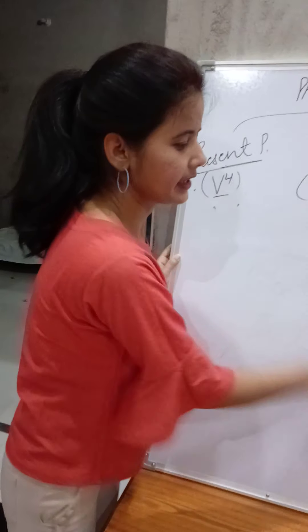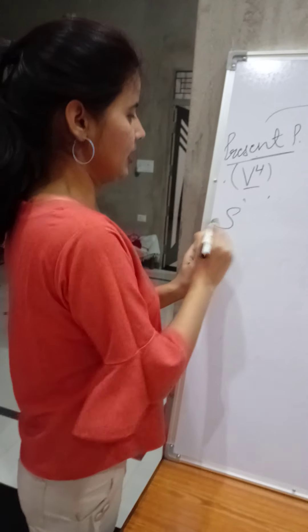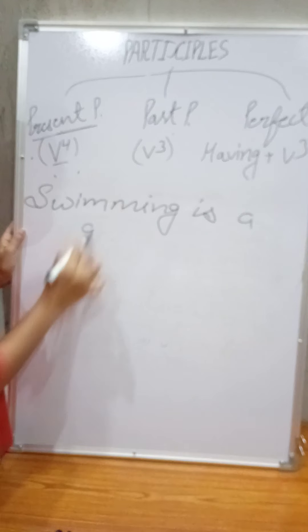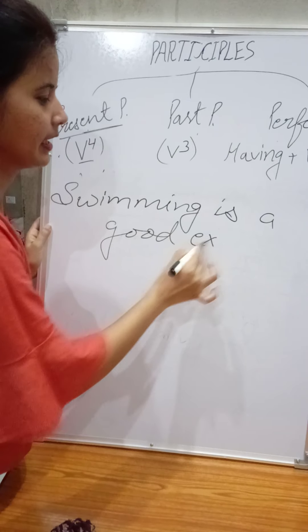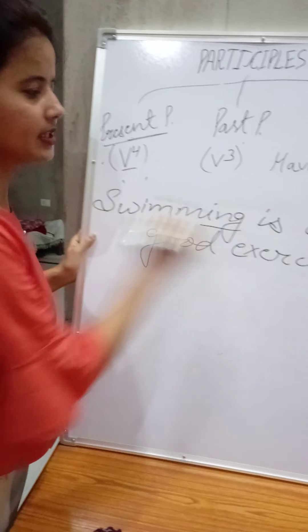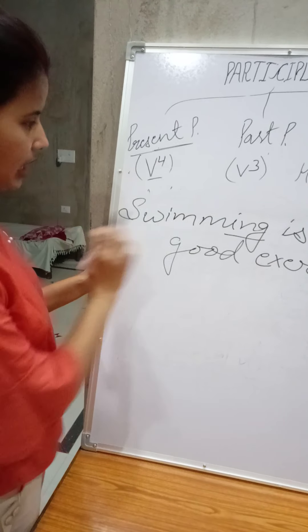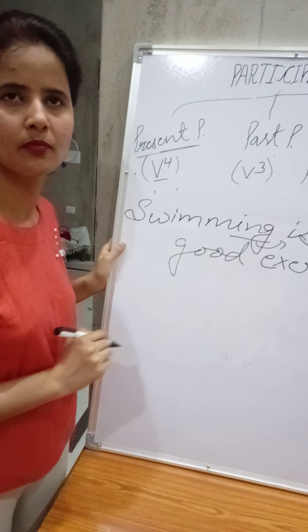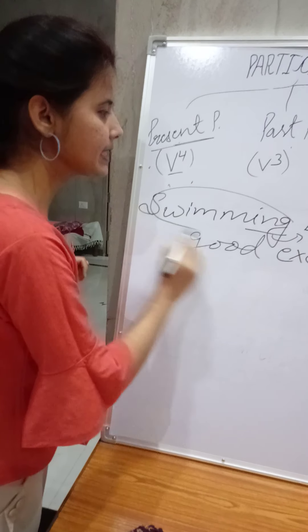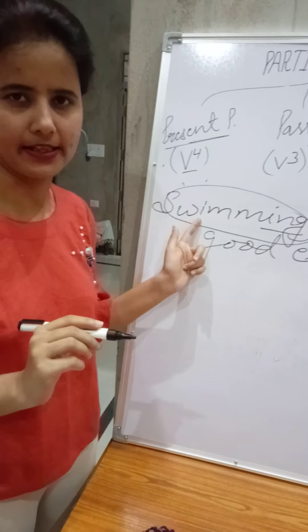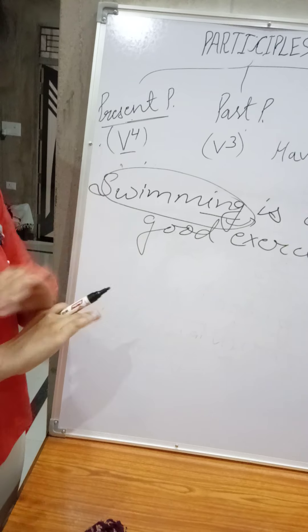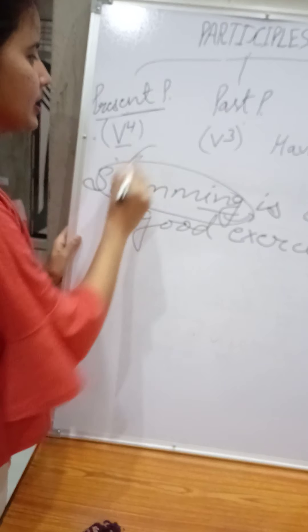Look at three examples. First: swimming is a good exercise. Which word consists of ING? Swimming. Now just after it, is any noun there? No noun is there, so it can't be present participle. This word itself functions as a noun in the sentence, so this will be a gerund. Nobody is swimming here, and this word is not describing any noun, so it is a gerund.